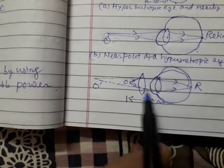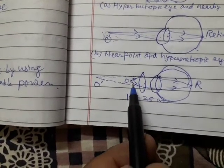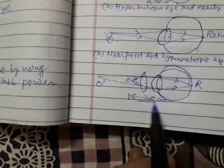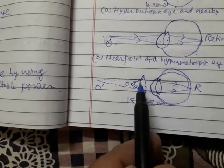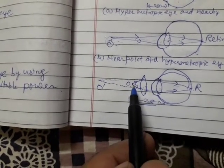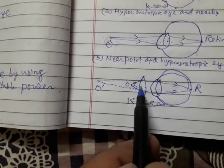So, here by using a convex lens, the image of the nearby object, say at 25 cm, is formed at the retina. This is because this object appears to be at this position by using this lens.